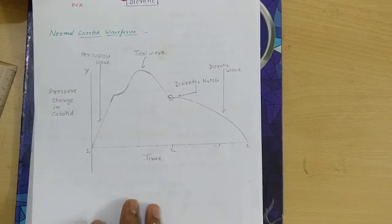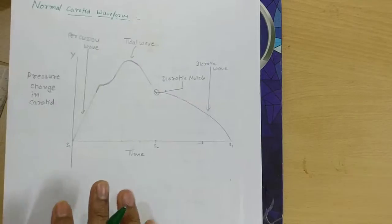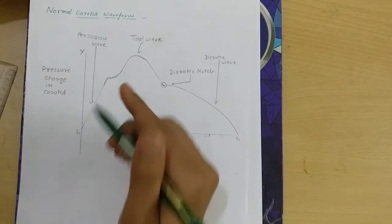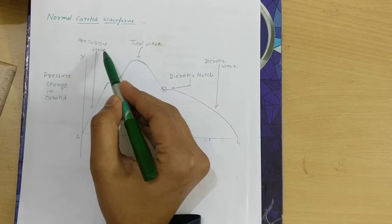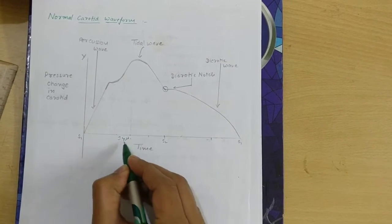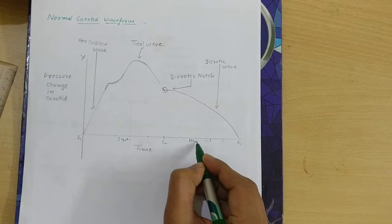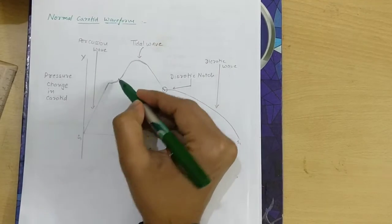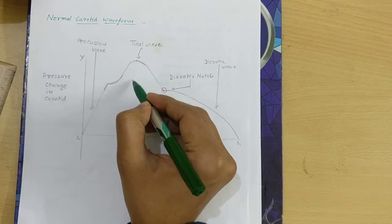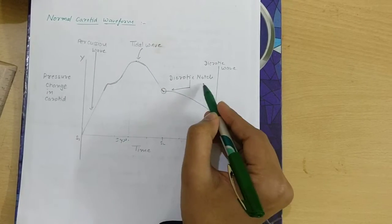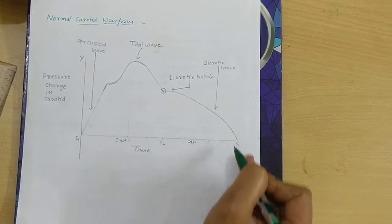How are these waves produced? See here, this is the diagram of a normal waveform. Here is the percussion wave, this is systole and this is diastole. Here is the percussion wave, here is tidal wave, there is a peak in mid-systole, and this is dicrotic notch and this is dicrotic wave.